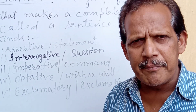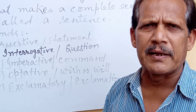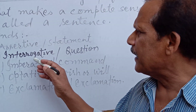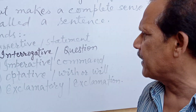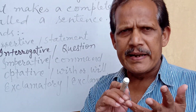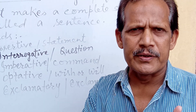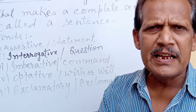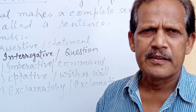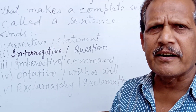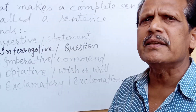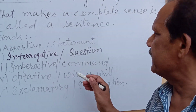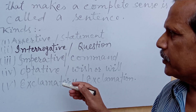For example: 'Go there', 'Come here', 'Sit down'. Sentences that begin with 'please' or 'kindly' — like 'Please help me' or 'Kindly sit here' — are also imperative sentences, because the main verb follows immediately after 'please' or 'kindly'.